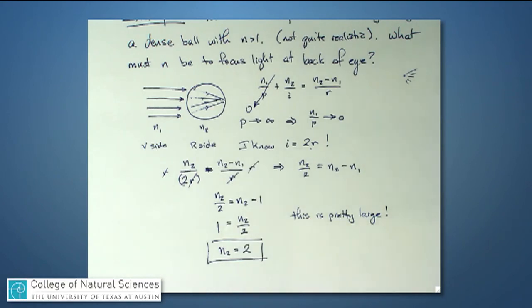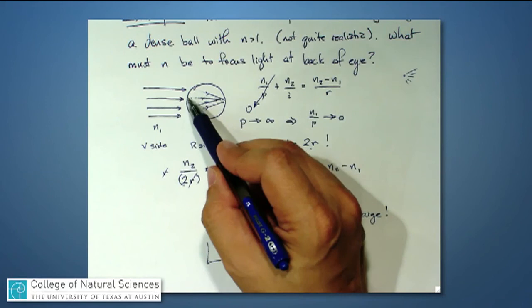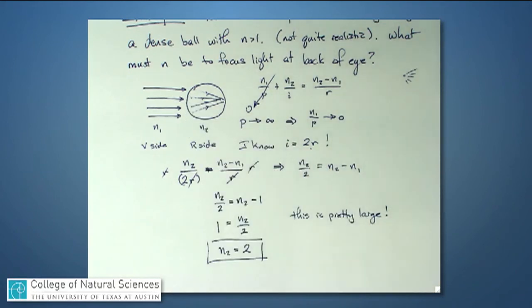In fact, we need a more clever technique to make an eye than just a big ball. And some of you may know that eyes have fancy things called lenses right here on the front surface that bring that light back to a focus even more sharply than just a spherical surface like this one.